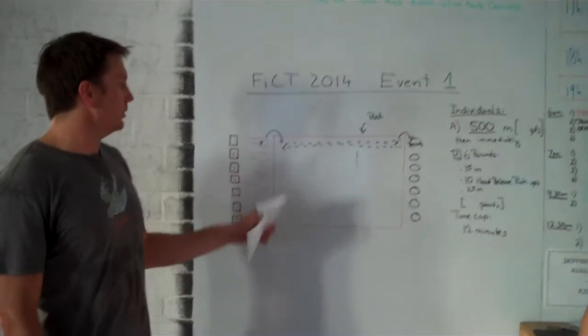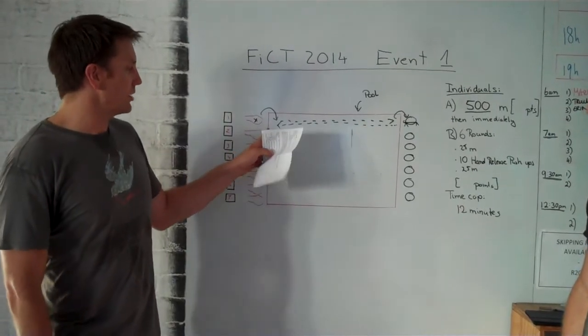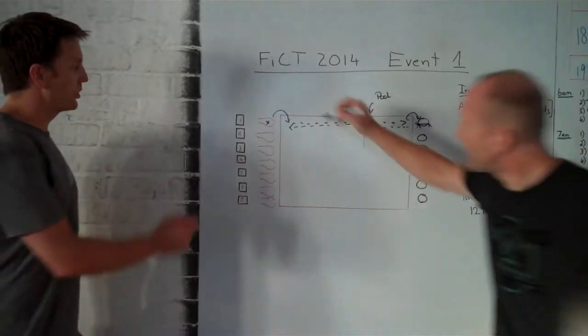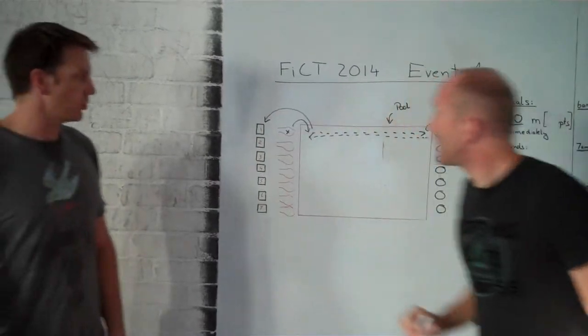Once you get to the sixth round, you'll come to the edge of the pool, jump out and proceed to the finish mat. Once you're on the finish mat, time will end.